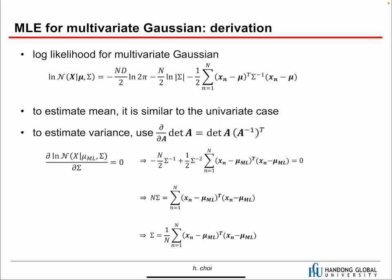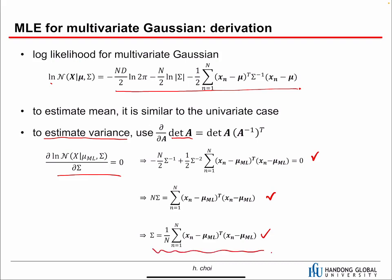When x is a vector, the mean becomes a vector and the variance becomes a covariance matrix. We apply the log function to the multivariate Gaussian. Estimating the mean follows the same approach as before. Estimating the covariance requires taking the derivative of a determinant, and following through the equations yields the same form: the MLE covariance is (1/n) Σ(x_i - μ̂)(x_i - μ̂)ᵀ.